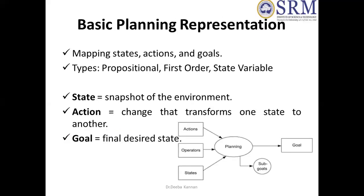The way in which we represent a basic planning system is through a state, action, and goal set. We know what planning is and what things are involved in it — next is how we represent that planning. We use a set of states, which represent the present scenario or snapshot of the environment. We have certain actions to be performed, and actions have preconditions and after-effects. And we have a goal state — the final desired outcome we want to reach. Based on the present state, we perform some actions and try to reach the goal, which can involve a lot of sub-goals.